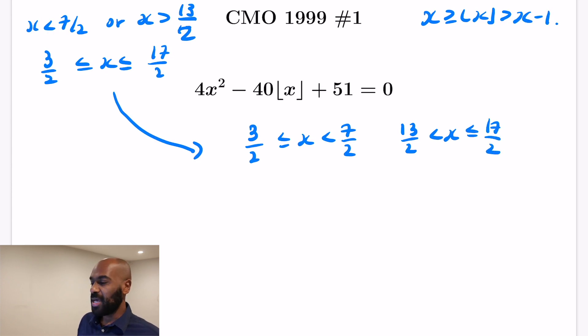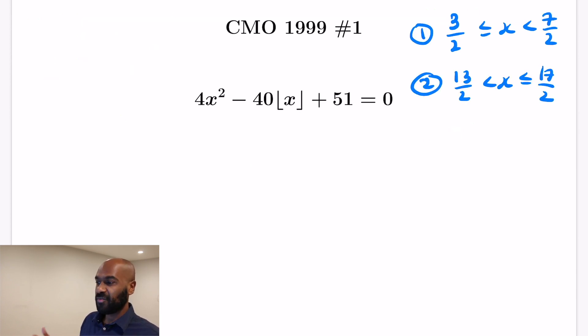So what we're going to do now then is take these two regions of x, which are relatively small, and look at what that forces floor of x to be. And then once we have what floor of x is forced to be, we can go back to this seemingly quadratic equation and actually solve it to figure out if things work out. So in the first case, x is between 1.5 and 3.5, so the floor of x is going to be either 1, 2, or 3. So let's take each case individually.